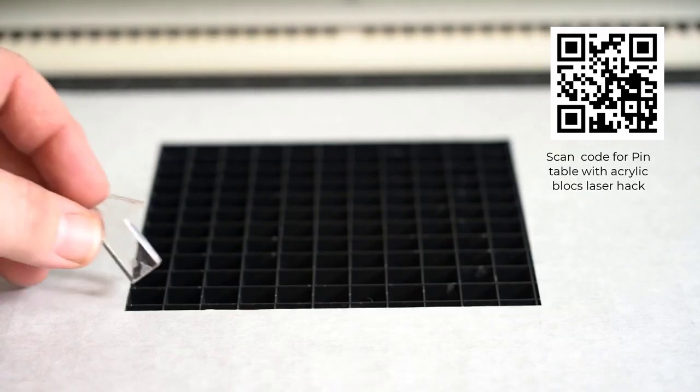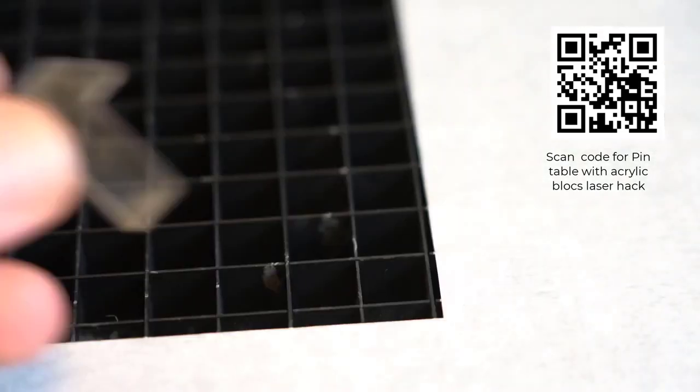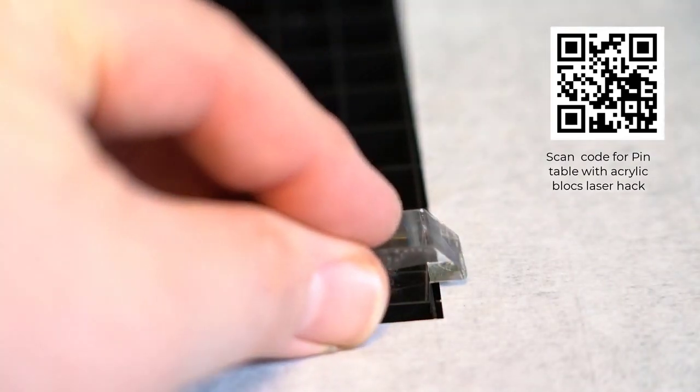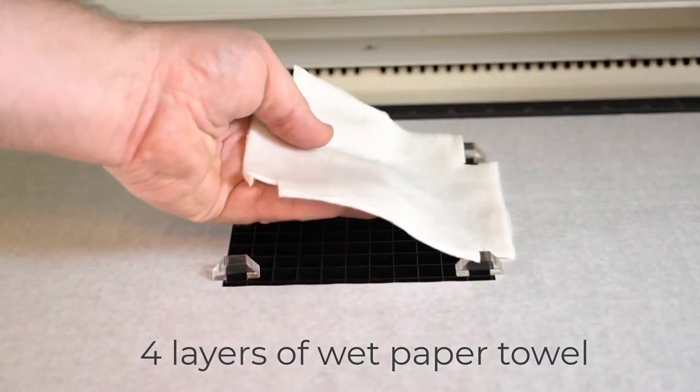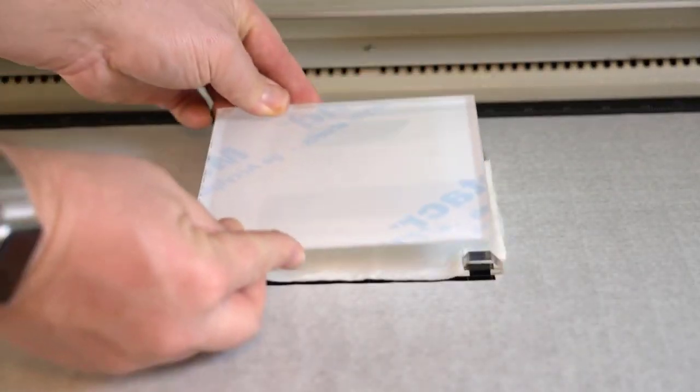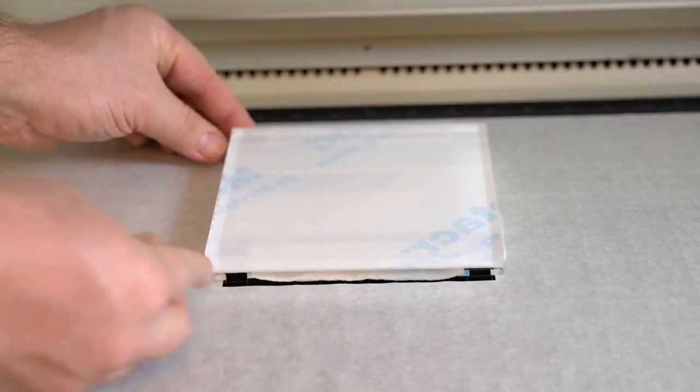Now I'm going to show you this again using acrylic blocks to both elevate the acrylic to reduce cutting table reflection points as well as to show you exactly how the wet paper towels work to reduce flare.